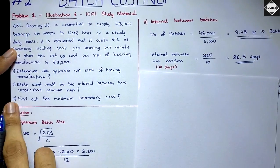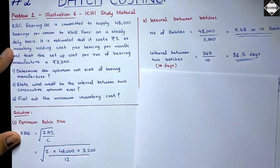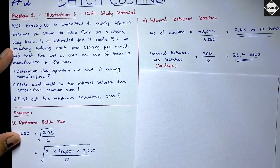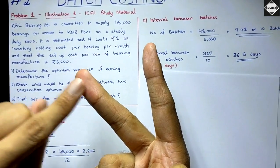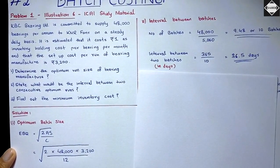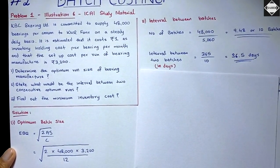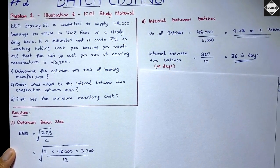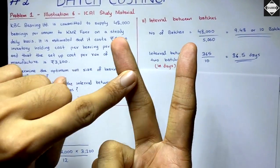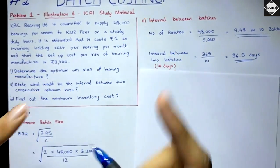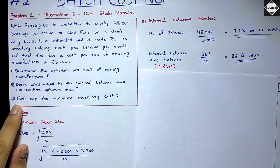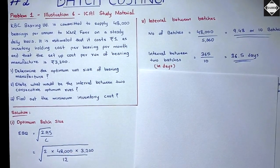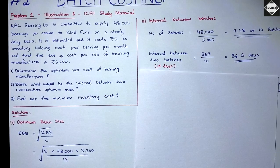The third question asks to find out the minimum inventory cost. In EBQ we have two costs: setup and processing cost, and carrying cost. Setup cost is not part of inventory cost. Think of Economic Ordering Quantity — inventory cost there included purchase cost, holding cost, and ordering cost. But here we only have carrying cost, so they are asking for total carrying cost.